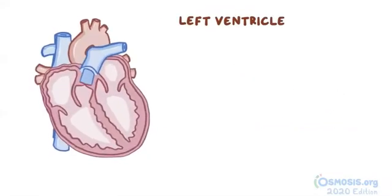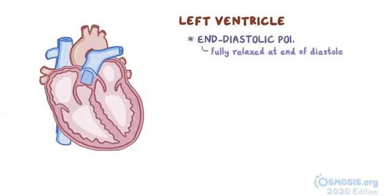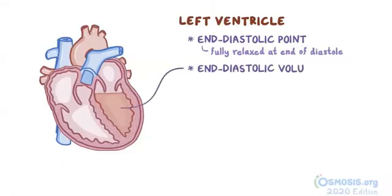To measure cardiac output, we first have to take a look at the left ventricle. There is a moment when the left ventricle is fully relaxed. It occurs at the end of filling, or diastole, also called the end diastolic point. The volume of blood within the left ventricle at this point is called the end diastolic volume, and it's about 120 milliliters.